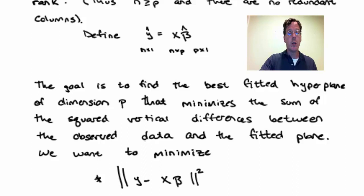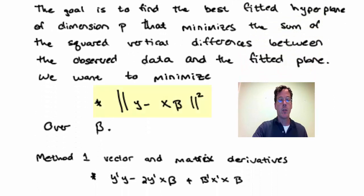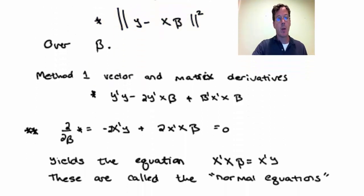So our goal, in the general sense, is to find the best fitted hyperplane of dimension P that minimizes the sum of the squared vertical distances between the observed y values and the fitted plane. This is tantamount to just minimizing the norm of y minus x beta squared over beta, where beta is now a P-dimensional vector.